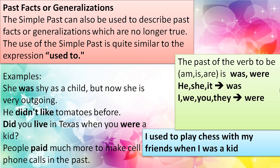The simple past can also be used to describe past facts or generalizations which are no longer true. This use is quite similar to the expression 'used to' — something you used to do in the past, like playing with kids in the street, but now you don't do that anymore because you grew up. So you say 'I used to play football with my friends on the street' — now I don't. You can also say 'I didn't use to' — positive or negative: 'I used to play' or 'I didn't use to play.'